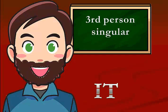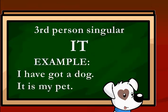And finally, it — for things or animals. For example, I have got a dog. It is my pet.